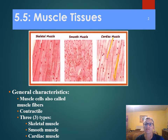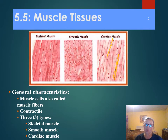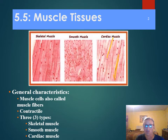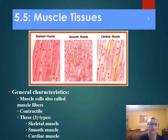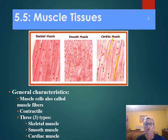Smooth muscle is found in areas like the wall of the stomach and the intestines. The muscle tissue that can be consciously controlled — that we think about moving — is skeletal muscle. Smooth muscle and cardiac muscle we don't consciously control; we don't think about moving those. Skeletal muscle fiber contains a lot of nuclei, as you can see here. So we're going to look a little more in-depth at these three types.